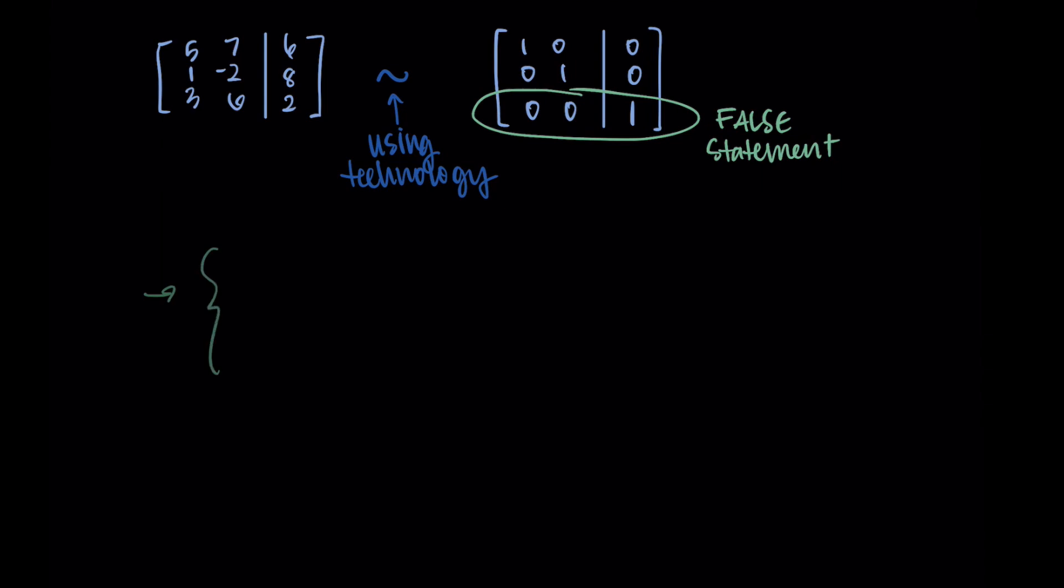We can also confirm that this is a false statement by looking at the corresponding system. So if c1 and c2 are the weights, we can write out the following equations: 1c1 plus 0c2 equals 0, that's across the first row; 0c1 plus 1c2 equals 0, that's the second row; and 0c1 plus 0c2 equals 1. So this would tell us that c1 is 0 and c2 is 0. But then it also has this statement that 0 equals 1, which as we said, that's not true. So because we get this false statement, we know that the whole system is inconsistent.